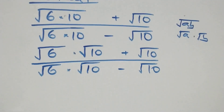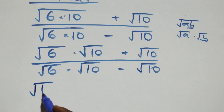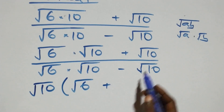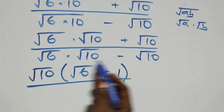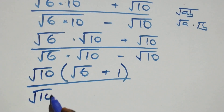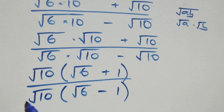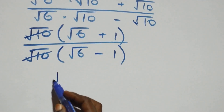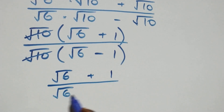The next step: root ten is common in the numerator, so we factor it out as root ten into brackets with root six plus one remaining. Also, root ten is common in the denominator, so we factor it out as root ten into brackets with root six minus one. We are then left with root six plus one over root six minus one.